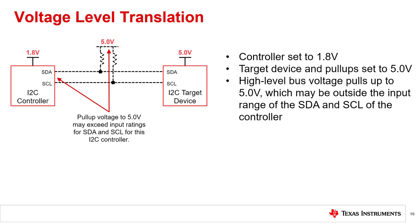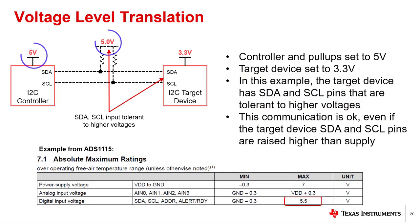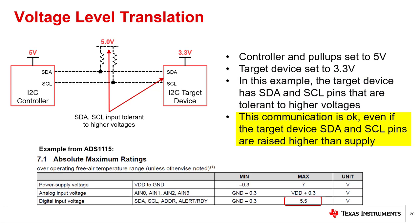Here's another example where the controller is set to 1.8 volts, but the pull-ups and the target device are set to 5 volts. In this example, the I2C bus lines are able to be pulled up to 5 volts. However, the controller device may not accept voltages that high. If the difference between the device voltages are too great, the lower voltage device may be susceptible to damage. Here's an example where the controller and pull-ups are set to 5 volts, but the target device is set to 3.3 volts. The I2C bus lines are able to be pulled up to 5 volts, exceeding the target device supply. However, the target device has inputs tolerant to higher voltages. This is a feature in some I2C devices, and may allow for direct connections between the I2C bus with pull-ups to the higher voltage supply. Check with the device datasheets for this possible feature.